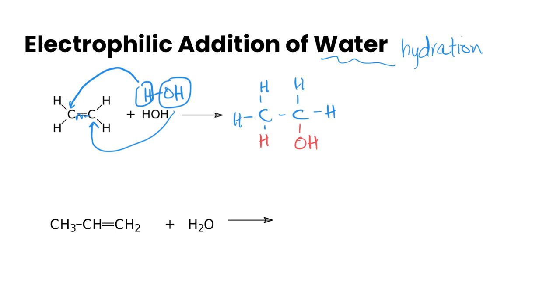When we have an asymmetrical alkene or alkyne, the way this is going to add is again the OH will attach to the carbon with less hydrogens attached, and the H will attach to the one that has more.